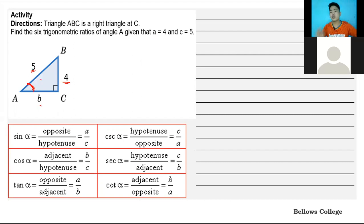Side A is 4, side C is 5. To solve for the third side of the right triangle, we have to use the Pythagorean theorem. You have to remember this. The Pythagorean theorem formula is A squared plus B squared equals C squared. Since C is given and A is given, we need to find B.